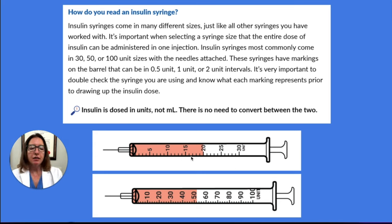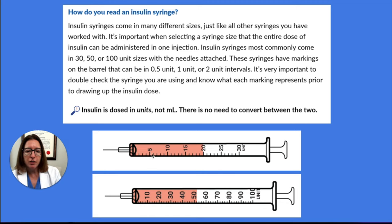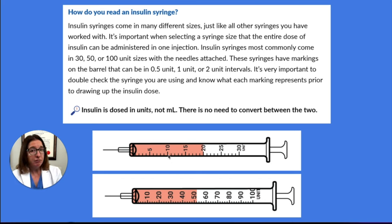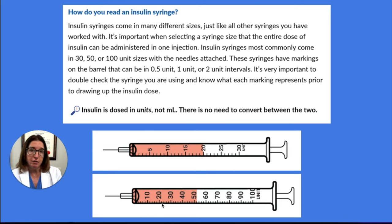It's going to be important for you to pay close attention to the markings on the syringe, because for some insulin syringes, each marking will be equal to one unit. For example, here we have five units, six units, seven units, eight units, nine units, ten units. However, some insulin syringes, like this one at the bottom which is 100 units, each little marking equals two units.